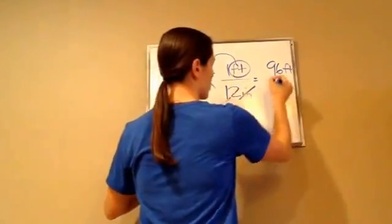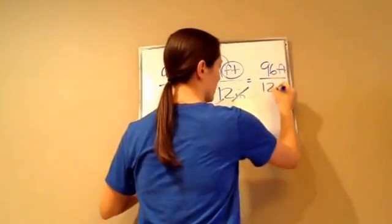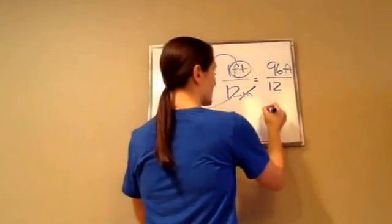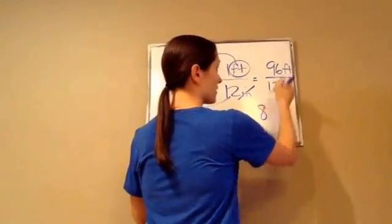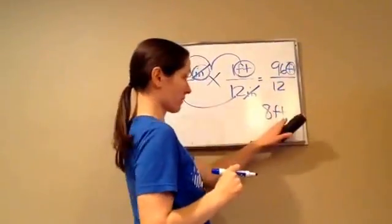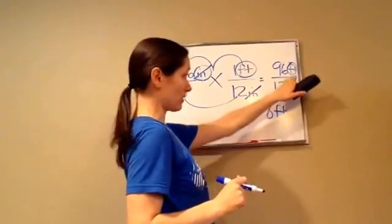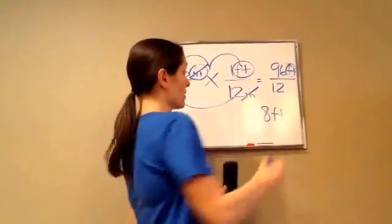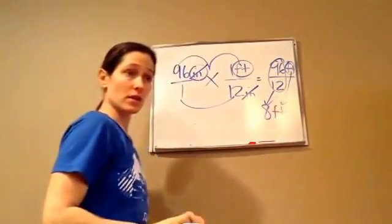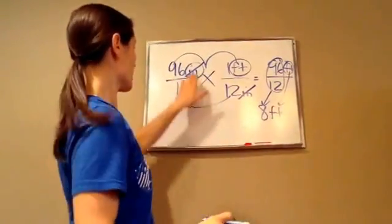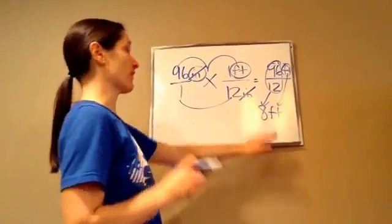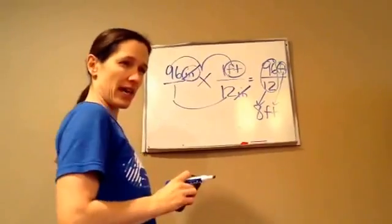Over 1 times 12 is 12. So 96 divided by 12 is 8, and then I've got my feet still sitting there. So 96 divided by 12 is 8 feet. So 96 inches is 8 feet. See how we did that? When you're converting measurements, you're always going to multiply using unit multipliers.